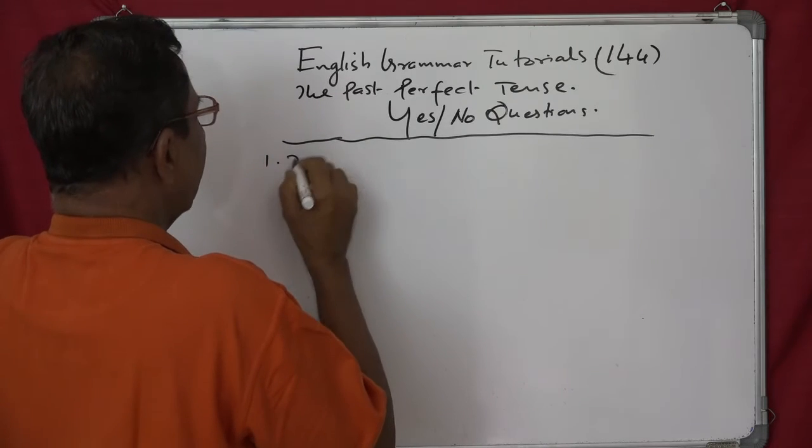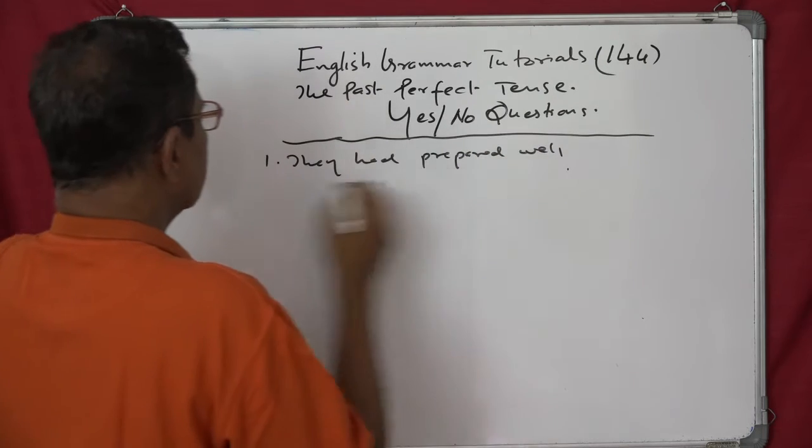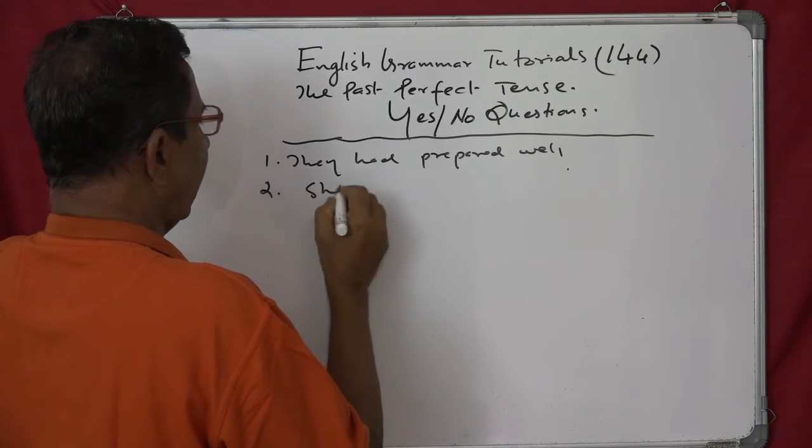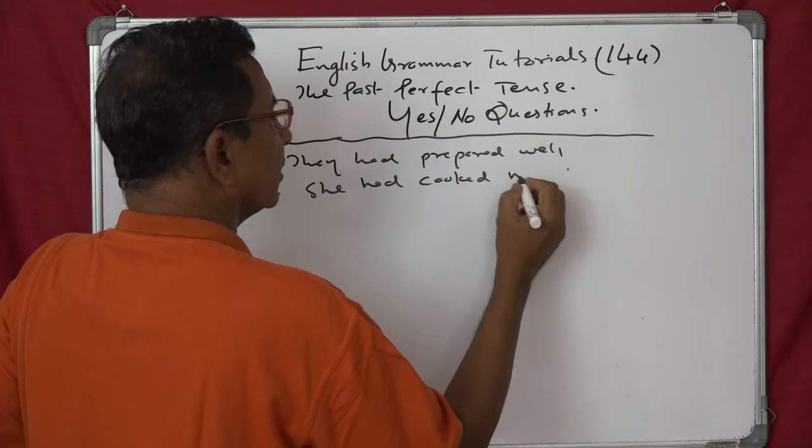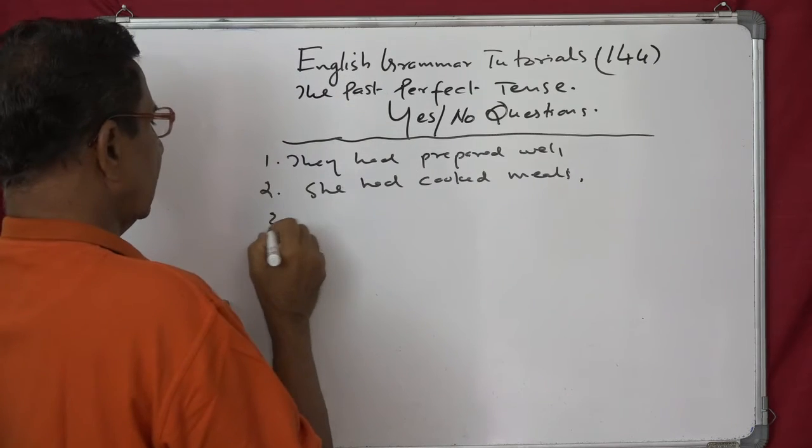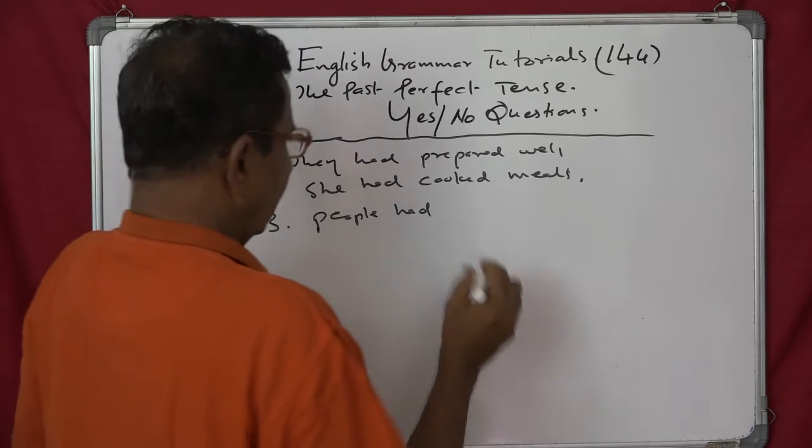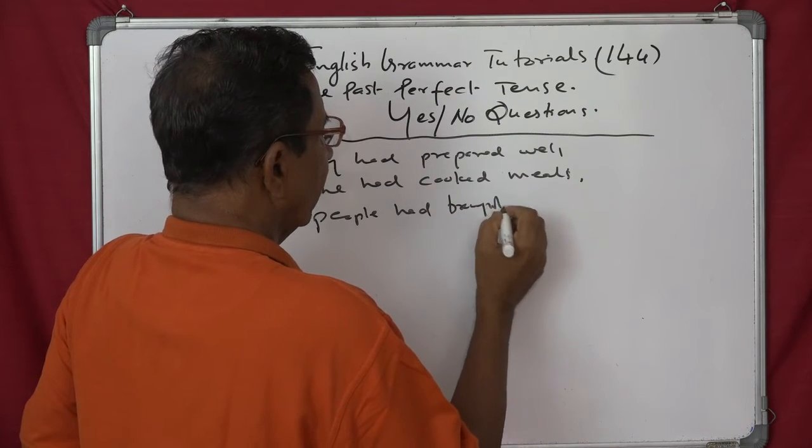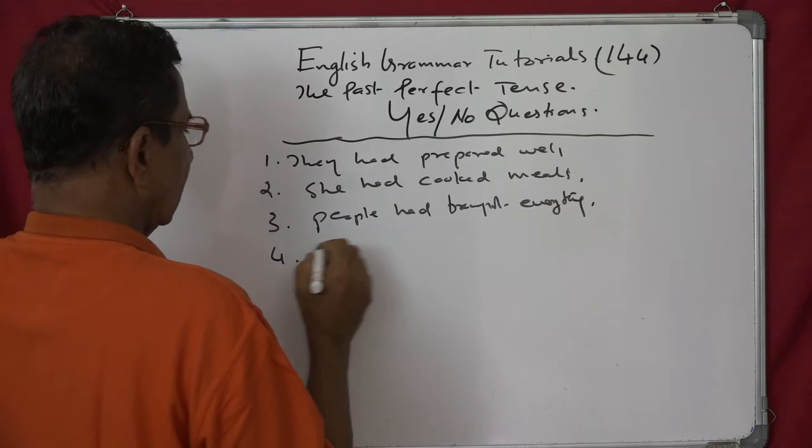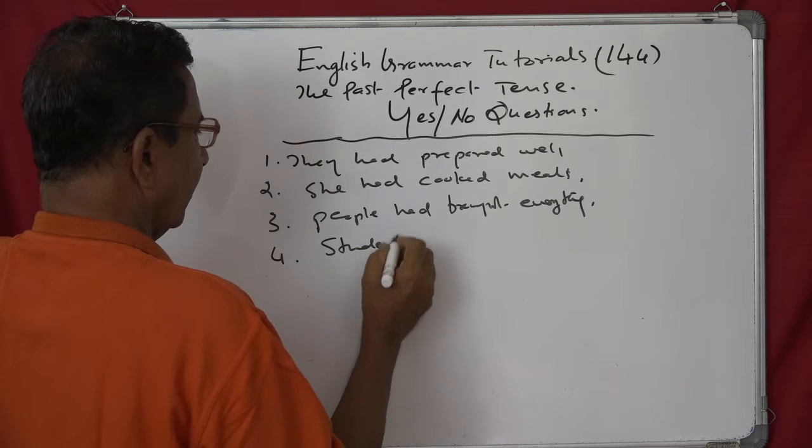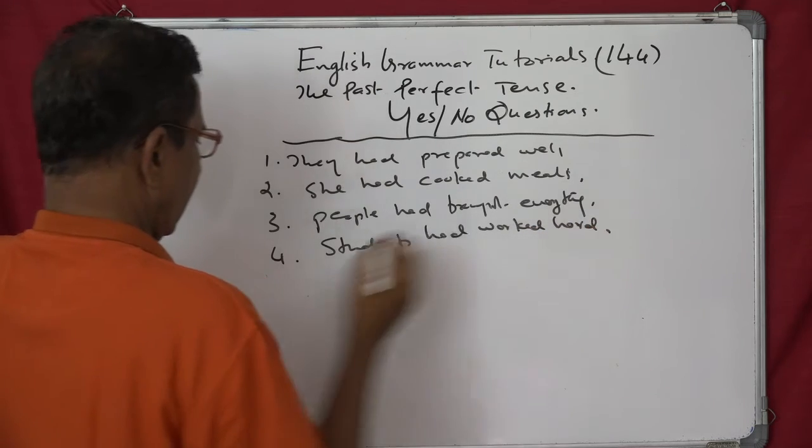It was a short exercise. Sentence one: They had prepared well. Second: She had cooked meals. Third sentence: People had brought everything. Fourth sentence: Students had worked hard. Fifth sentence: Many people had suffered. And sixth sentence: